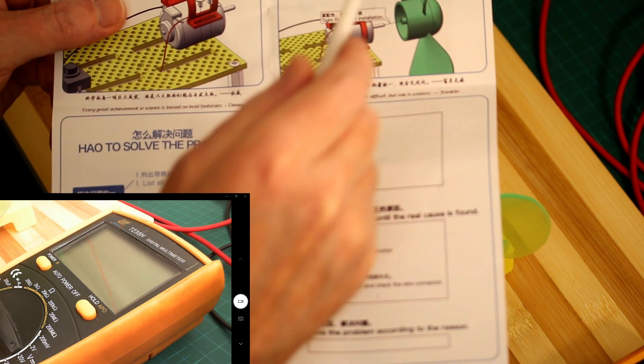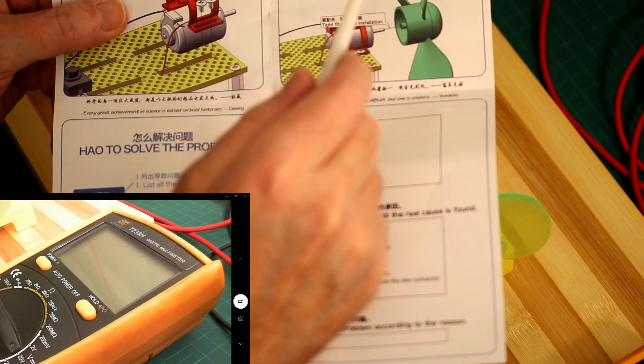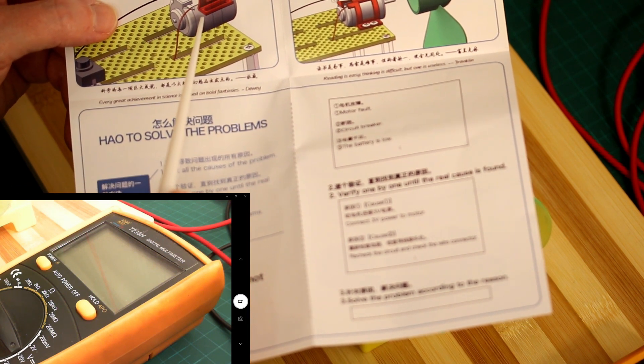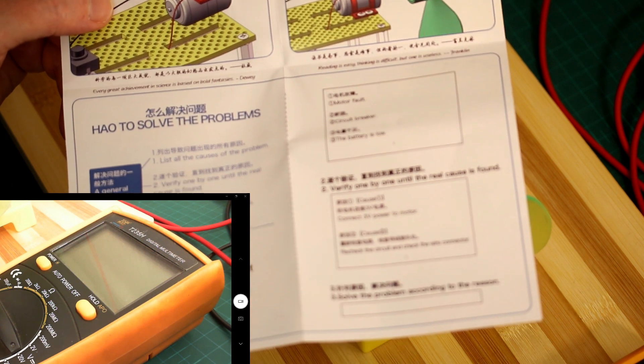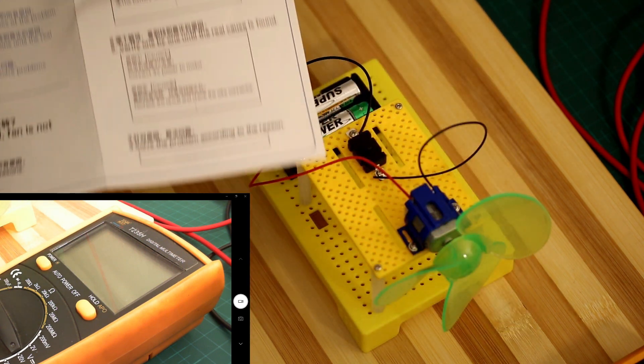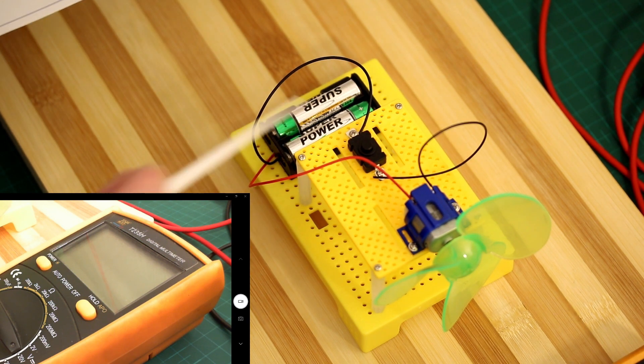Then wire up the motor. Fit the motor holder and press the blade on, and then it's a case of install some batteries.